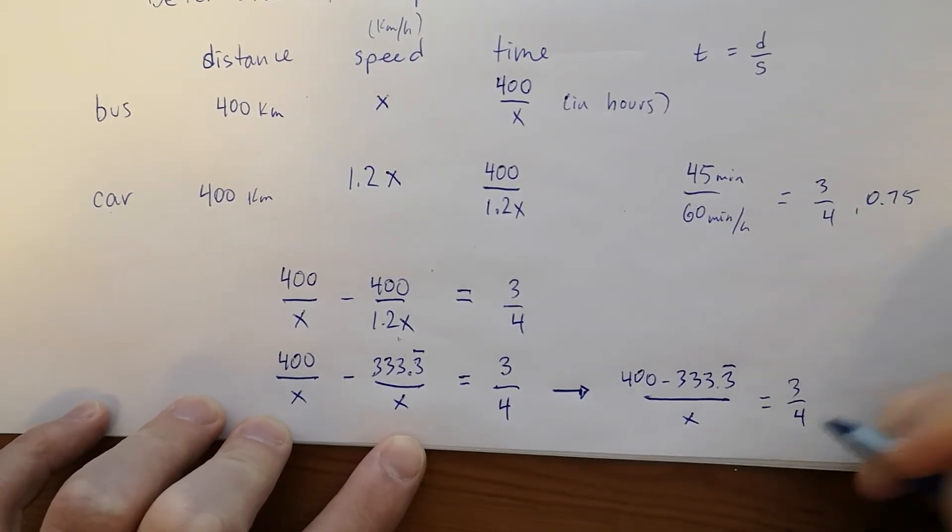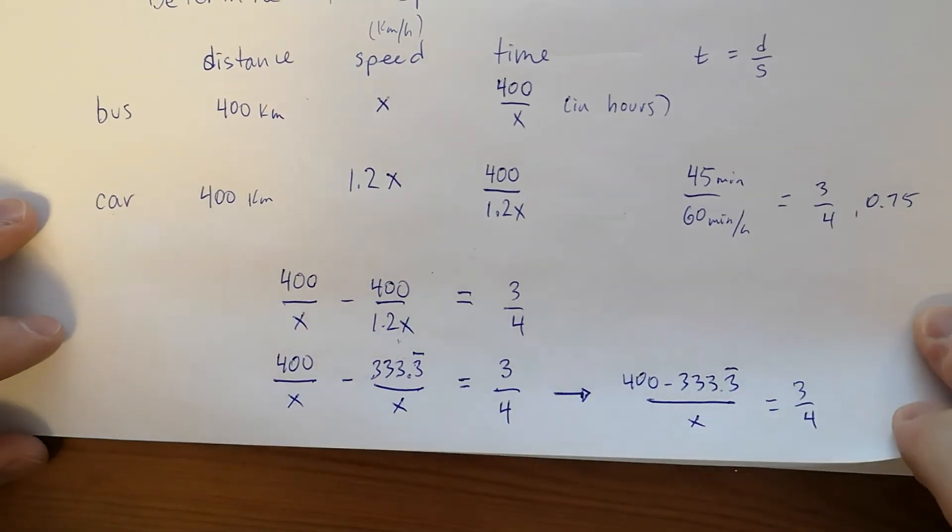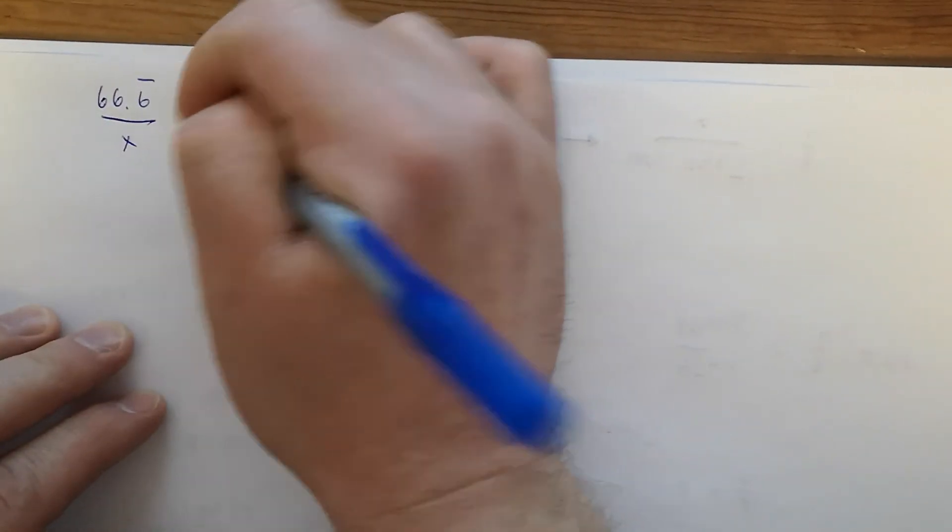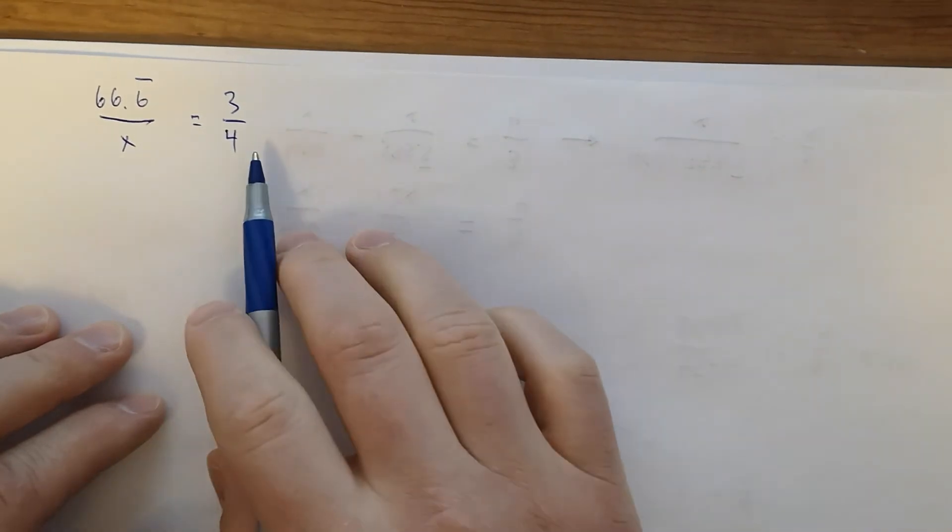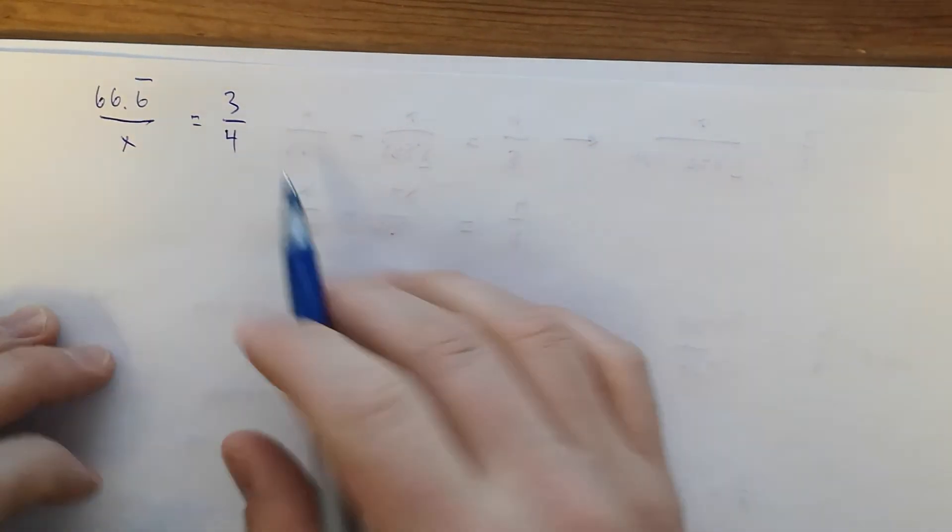x equals 3 over 4. Let me just switch sides here. When you subtract that 333.3 repeating from 400, you get 66.6 repeating. It's still over x. And that equals 3 over 4. So that's 3 quarters of an hour. Now you can cross multiply.